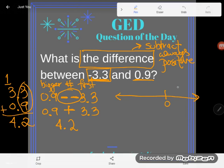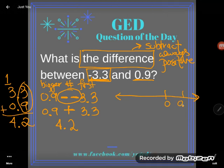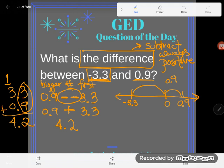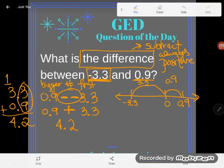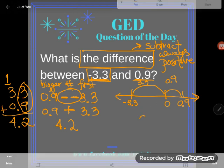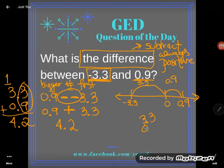0.9 is positive, so it's going to be over here on the right of zero, and -3.3 is way back here. And we can see that the distance between zero and 0.9 is 0.9. And the distance between zero and -3.3 is just 3.3. And if we need both of those pieces together to get all the way from here to there, we're going to have to add them up. 3.3 plus 0.9.